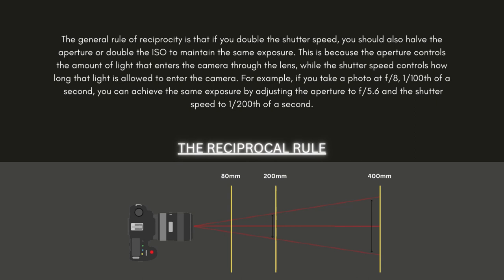The general rule of reciprocity states that if you double the shutter speed, you should halve the aperture or double the ISO to maintain the same exposure. This is because aperture controls how much light enters through the lens, while shutter speed controls how long that light is allowed to enter. For example, if you take a photo at f/8 and 1/100th of a second, you can achieve the same exposure by adjusting to f/5.6 and 1/200th of a second. Understanding reciprocity allows you to make quick adjustments to aperture, shutter speed, and ISO to achieve correct exposure and your desired creative effect.